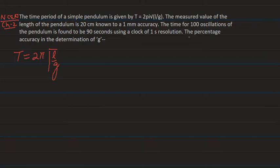In this question, we have to find out the percentage accuracy in the determination of g — which simply means we have to find out the percentage error in the determination of g.